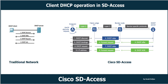In this video I am going to explain about the client DHCP operation in Cisco SD Access. Once the fabric is configured you can start onboarding clients into the network. The connected clients like C1 will start sending DHCP requests to obtain an IP address. The DHCP flow in SD Access fabric is different compared to traditional networks, so let's go through the process step by step.